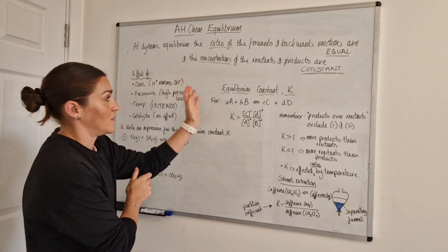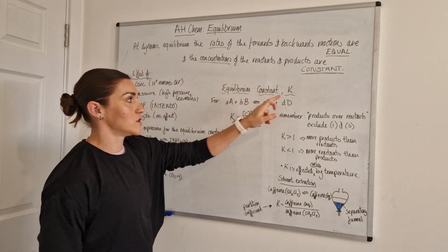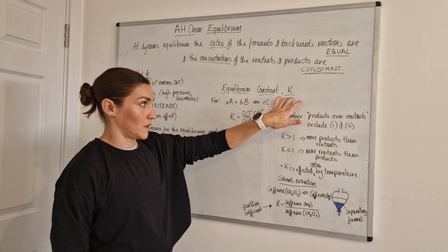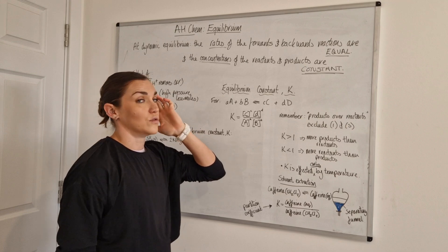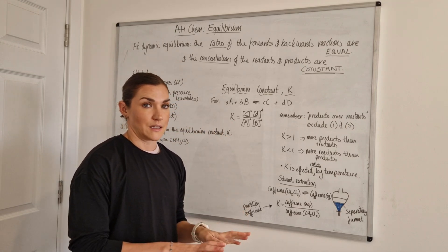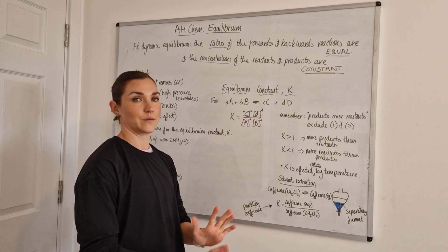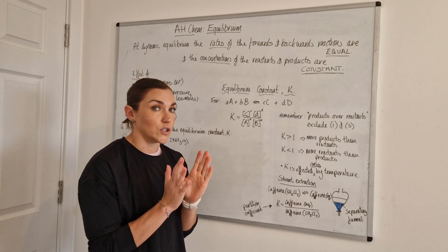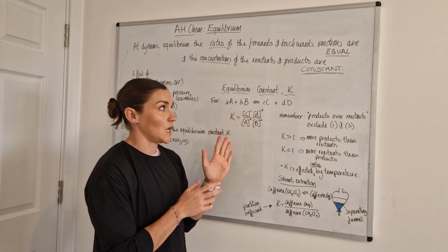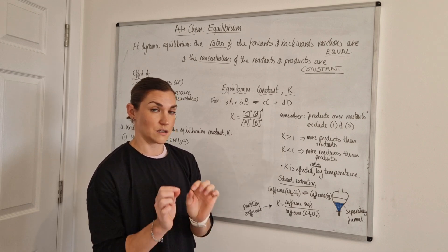That's the higher content covered. Now we move on to the advanced higher material, which centres on the equilibrium constant — capital K. It's very important when writing the equilibrium constant that you make it clearly a capital K. In kinetics, when it comes to rate equations, there's also a K, but that's a small k. Make sure you clearly show the difference: equilibrium constant is a large K, and the kinetics rate constant is a small k.